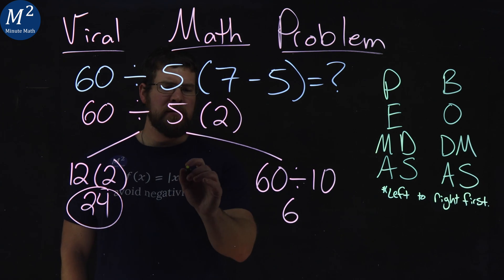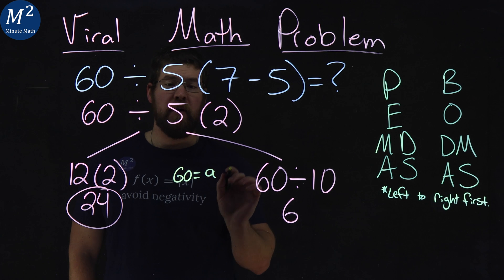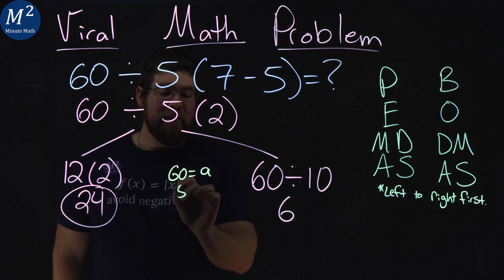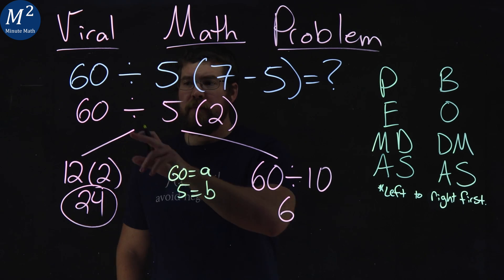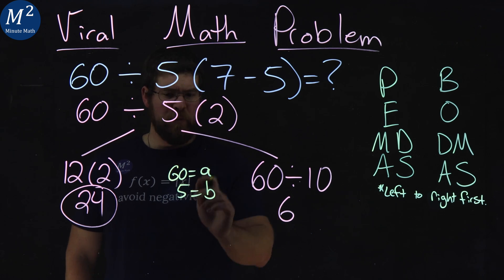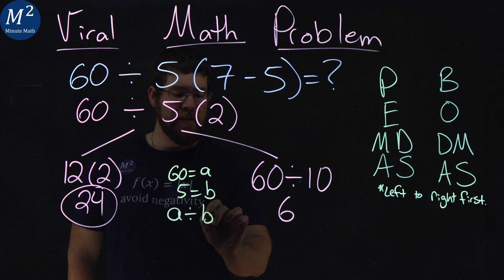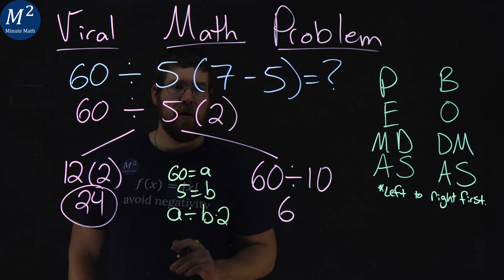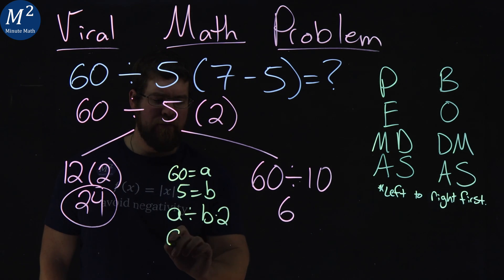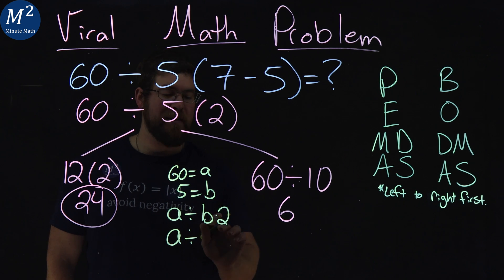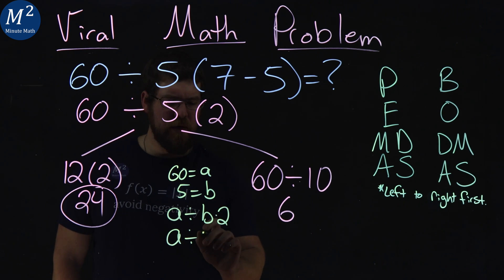If I said, well, 60 is equal to the letter A and 5 is equal to the letter B, 60 divided by 5 times 2 would be A divided by B times 2. Or if we rewrote this, we'd have A divided by, well, B times 2 is 2B here.